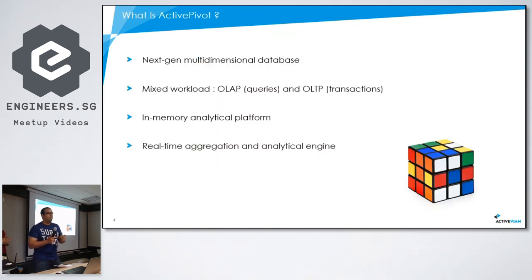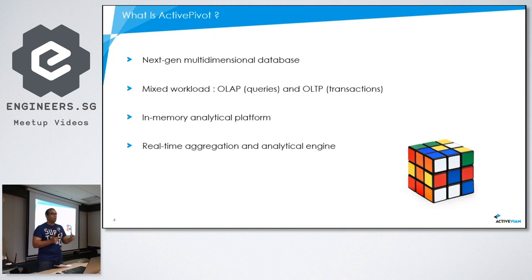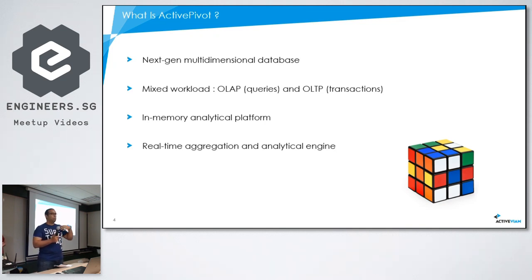Some of you, when you hear OLAP, will say it sounds like the 1990s. Our company is almost 13 years old. When we started building our product, we tried to build the next-generation multidimensional database. ActivePivot, the back-end server, is not only an OLAP but also an OLTP, which means you can query this multidimensional database and at the same time add transactions — almost impossible in old OLAP technologies. We are incremental, and you can keep adding data into the engine.